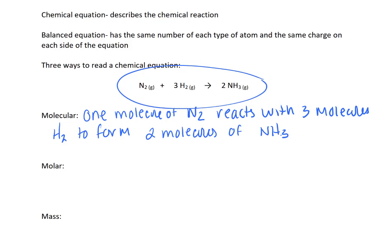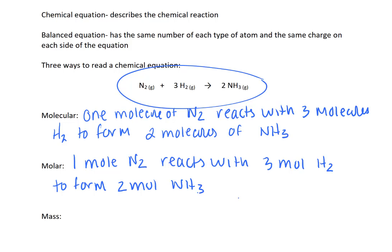If we take this whole equation and multiply it by 6.022 times 10 to the 23rd, then we're at the molar level, in which we say one mole of N2 reacts with three moles of H2 to form two moles of ammonia. So this is going to be the way that we most commonly are going to be interpreting chemical equations in the future.